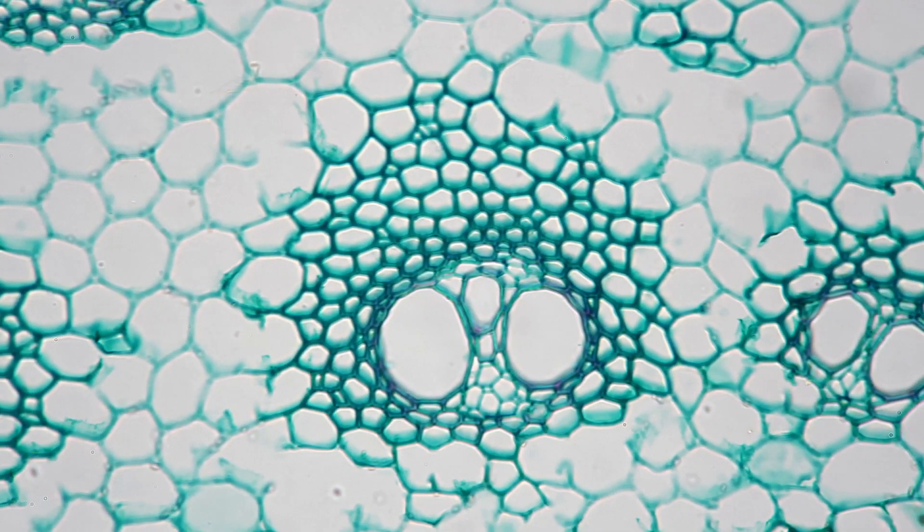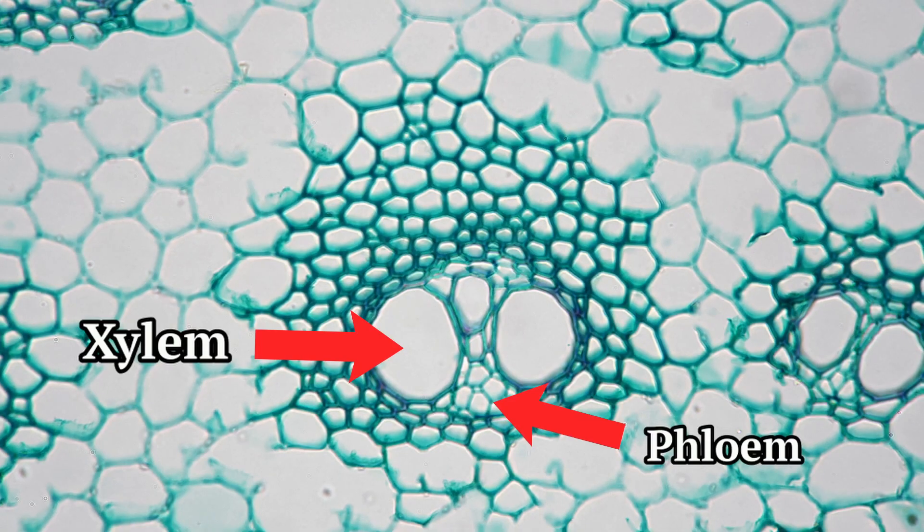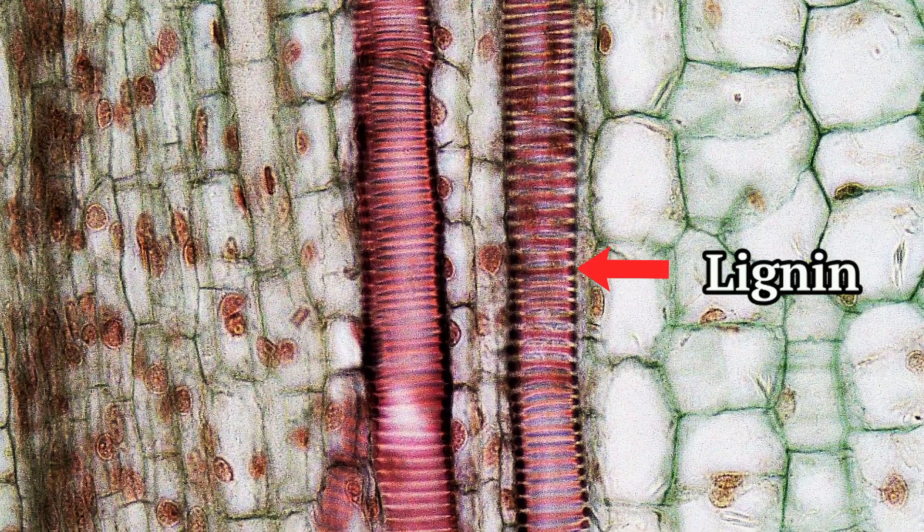Early land plants could absorb water and nutrients from their immediate surroundings, but lacked a system to transport these resources over longer distances. This is where vascular plants came in. Vascular plants developed a specialized network of tubes called xylem and phloem. Xylem transports water and minerals from the roots to the rest of the plant, while the phloem distributes sugars and other nutrients. The xylem also contains a polymer called lignin, which adds rigidity and structural support. This internal transport system enabled plants to grow taller and spread across a wider range of environments.